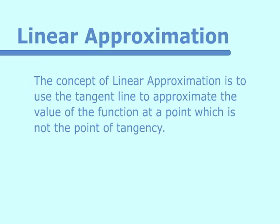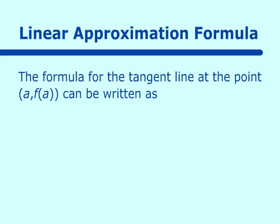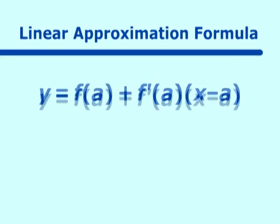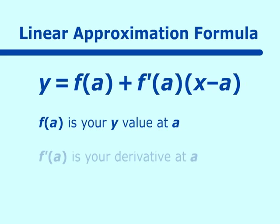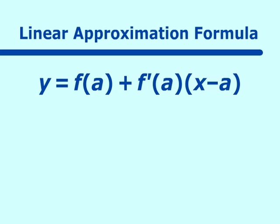How do we use it? Well, we need a formula. The formula for the tangent line at a point a, f of a, can be written as y is equal to f of a plus f prime of a times x minus a. Here, f of a is your y value at a, f prime of a is your derivative at a, and a is the x coordinate or x value. That is the formula you have been using for the equation of a tangent line.